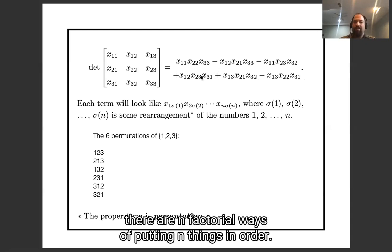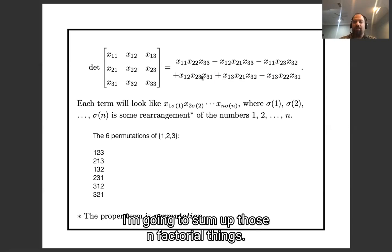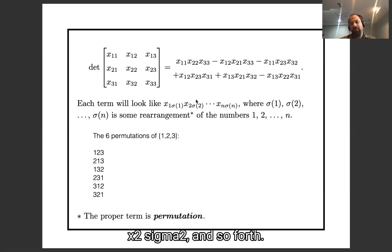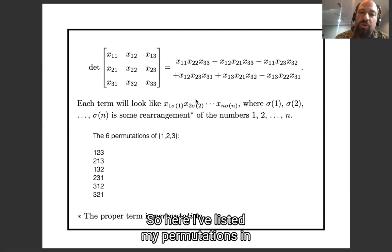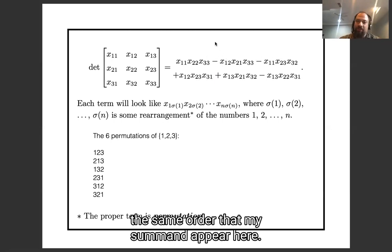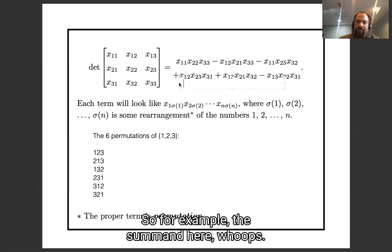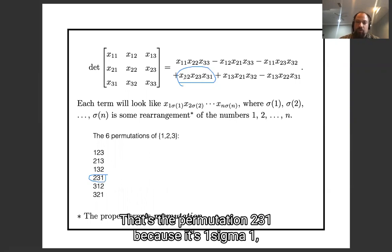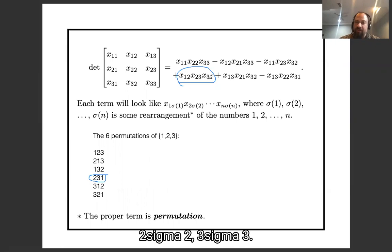There are n factorial ways of putting n things in order, and I'm going to sum up those n factorial terms. For each permutation σ, my corresponding term will be x_{1,σ(1)} · x_{2,σ(2)} · ... · x_{n,σ(n)}. Here I have listed my permutations in the same order that my summands appear. For example, the summand x_{1,2} · x_{2,3} · x_{3,1} corresponds to the permutation two, three, one, because it's one-σ(1), two-σ(2), three-σ(3).